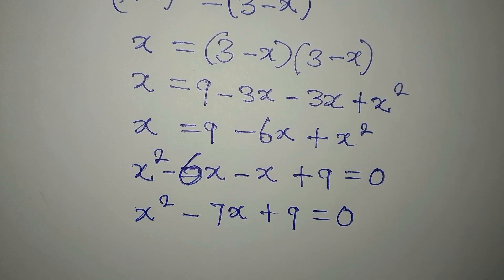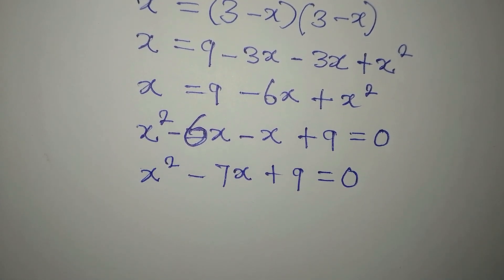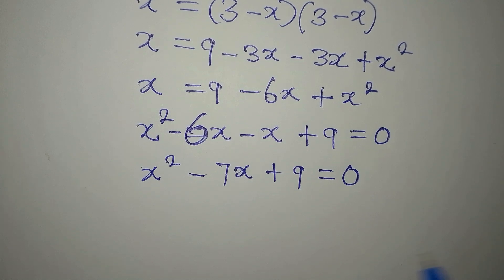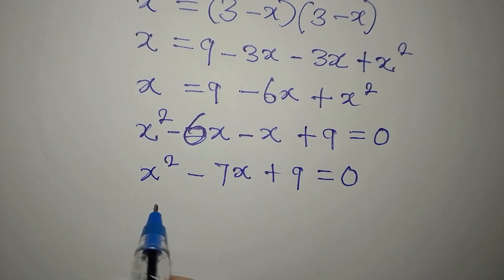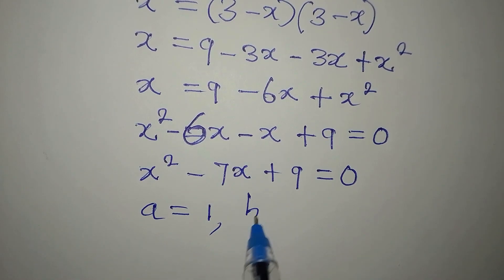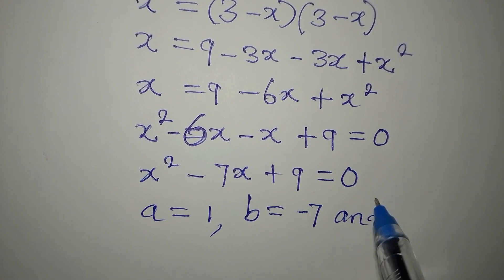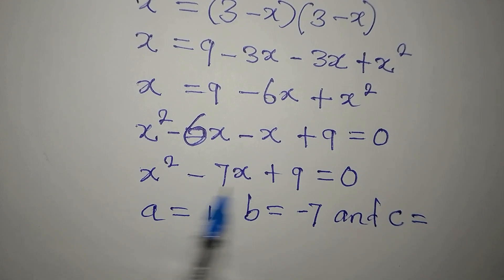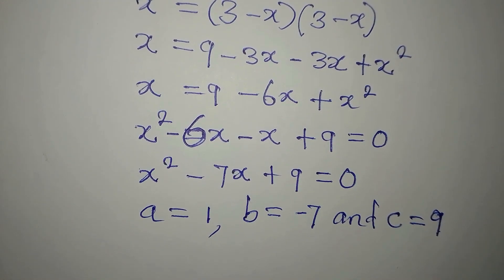We can solve this quadratic equation using the quadratic formula. In the formula, a is the coefficient of x squared and it's 1, b is the coefficient of x and it is minus 7, and c is the constant in the equation and it's 9.